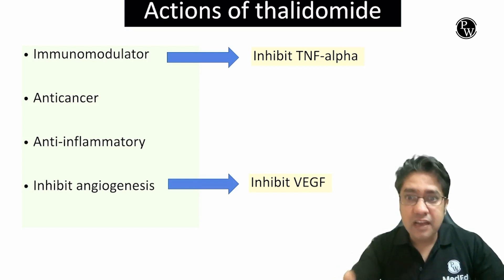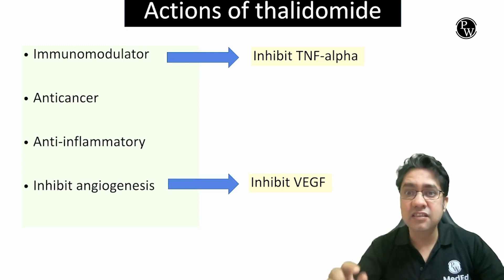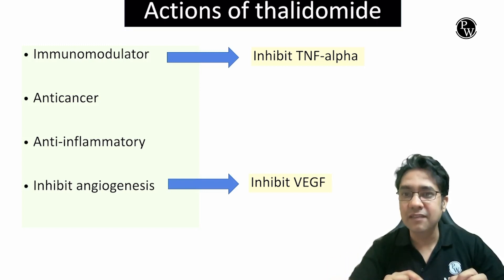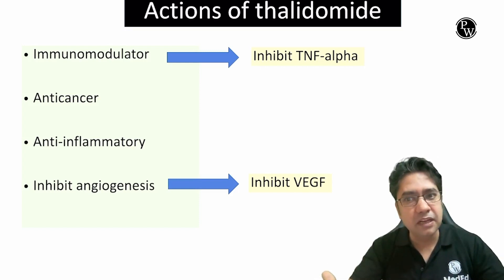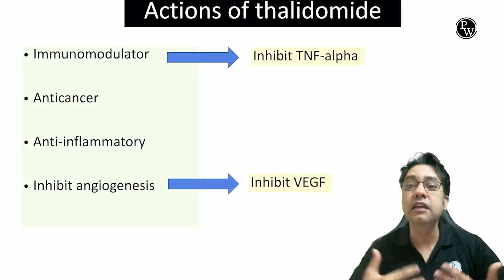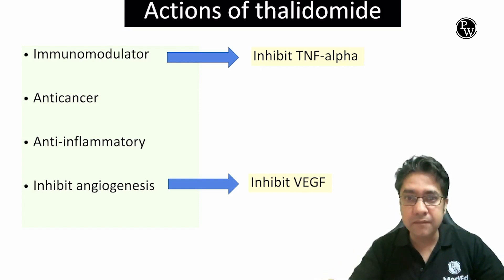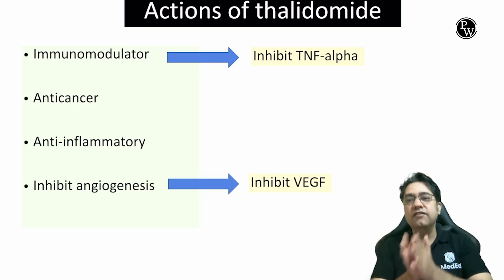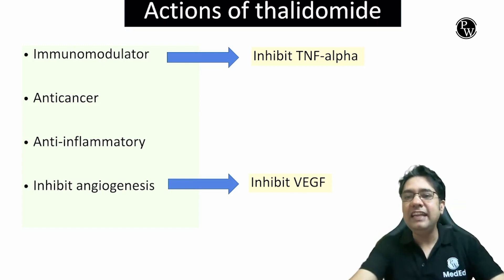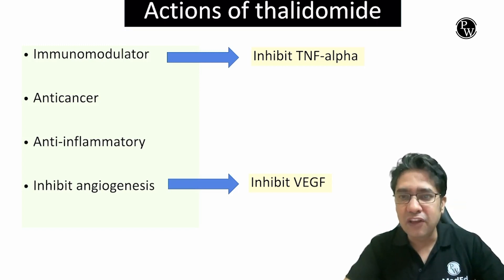Remember, angiogenesis is a hallmark of cancer. Cancer cells make new blood vessels for themselves so that they can grow. Hence, inhibiting angiogenesis is one of the additional anti-cancer properties of Thalidomide.